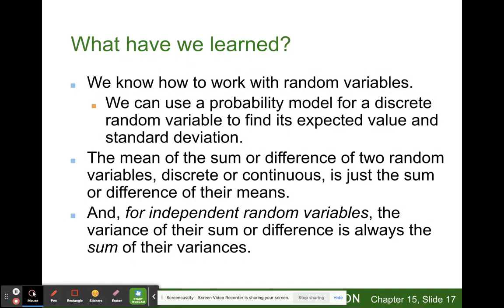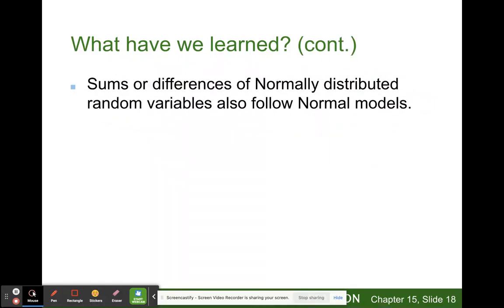We know how to work with random variables. We can use the probability model for a discrete random variable to find its expected value and standard deviation. The mean of the sum or difference of two random variables, discrete or continuous, is just the sum or difference of their means. For independent random variables, the variance of their sum or difference is always the sum of their variances. Sum or differences of normally distributed random variables also follow normal models.